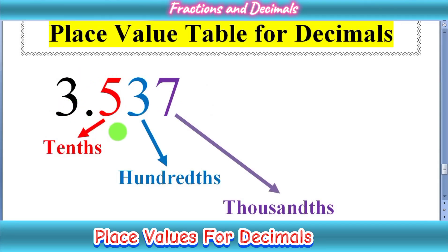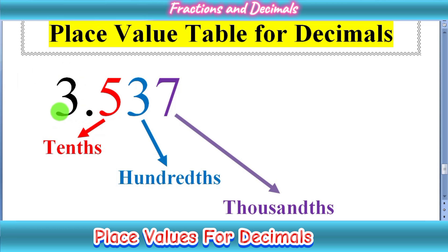Decimals are basically types of numbers in which we have two parts. One part is called whole number and the second part is called fractional part or decimal part. You can see here a number 3.537. Here you can see a point that is called decimal point. From the decimal point to the left side, we have the whole number as we learned in previous classes — ones, tens, hundreds. These are simple numbers.